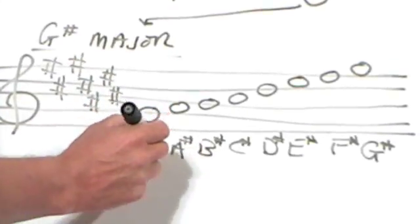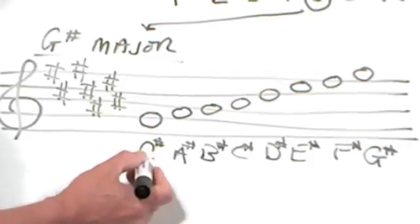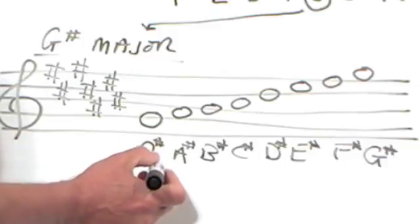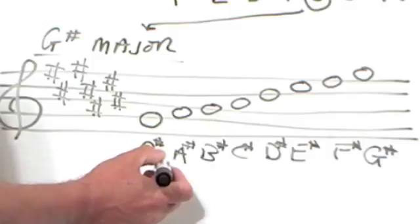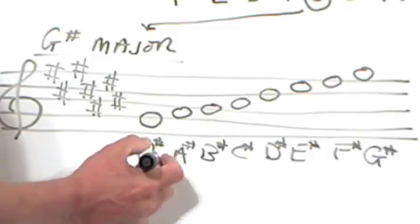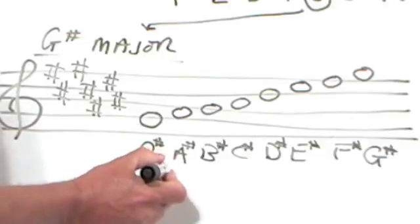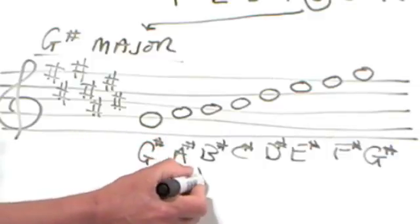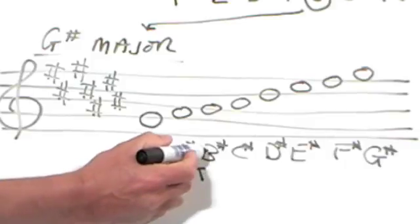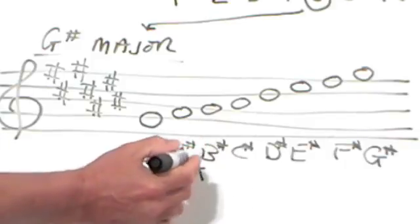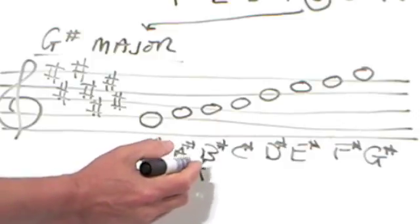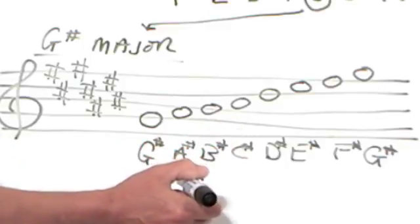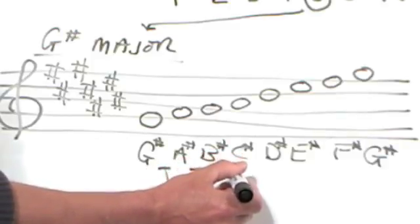So if you remember what we did before with this as a next step, we analyze the intervals between each of these notes in terms of tones and semitones, and then we compare that to our major scale formula. So the gap between G sharp and A sharp is a tone. The gap between A sharp and B sharp is a tone. The gap between B sharp and C sharp, you have to think a bit carefully. B sharp is actually a note that sounds the same as C, so C to C sharp is an extra semitone on top of that. So that gives us a semitone.